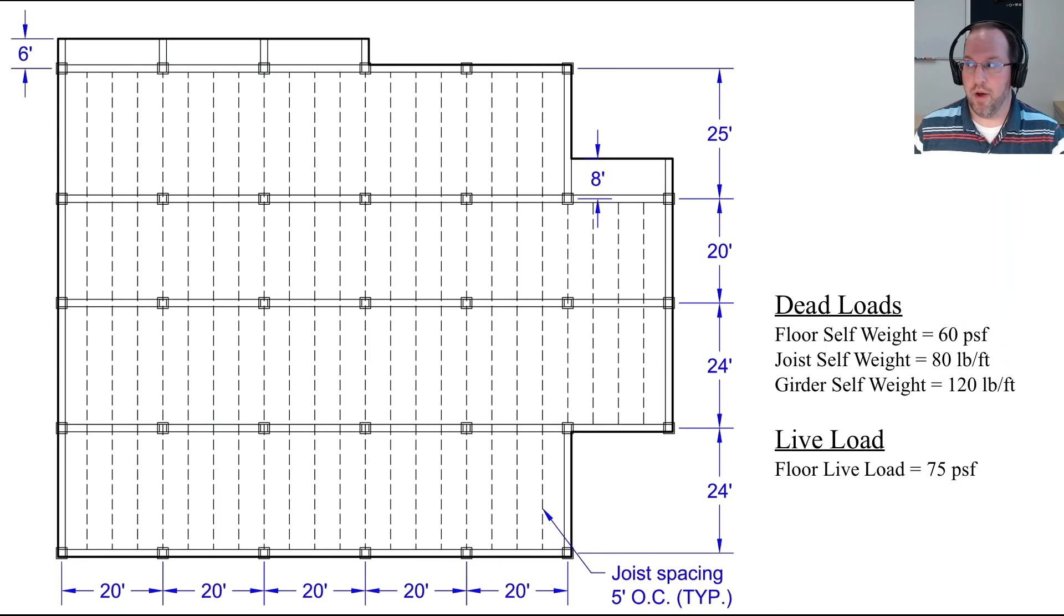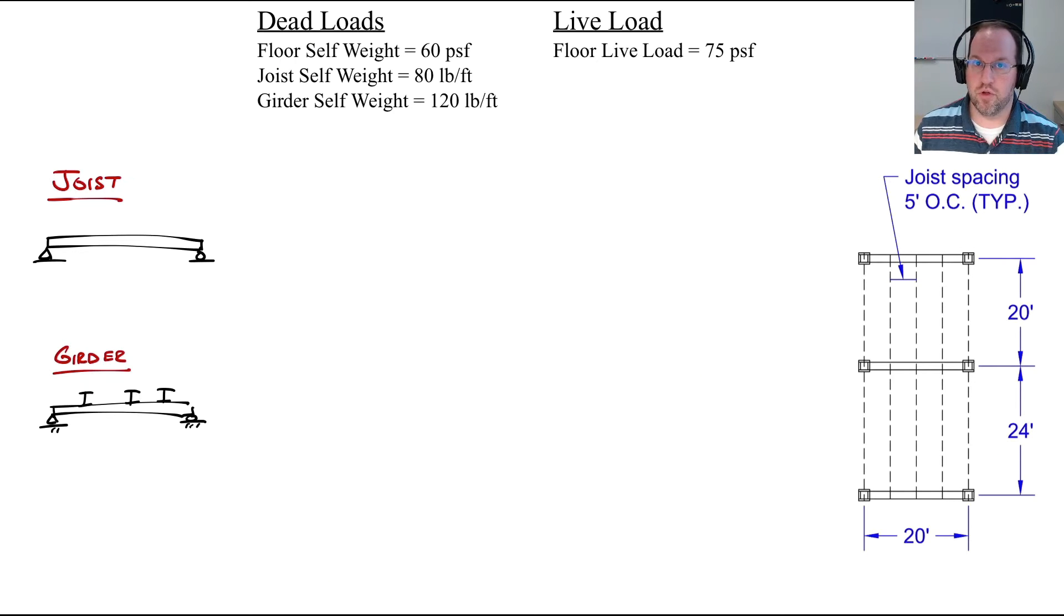Let's consider an example problem where I calculate my factored loads for a typical interior joist and also a typical girder. For this example I'm only going to consider dead loads plus live loads. For my dead loads I have a floor self-weight, a joist self-weight, and a girder self-weight. For my live loads I also have a floor live load. Typically we'll compute our dead load and live loads independently and then combine them after the fact with our various load combinations.